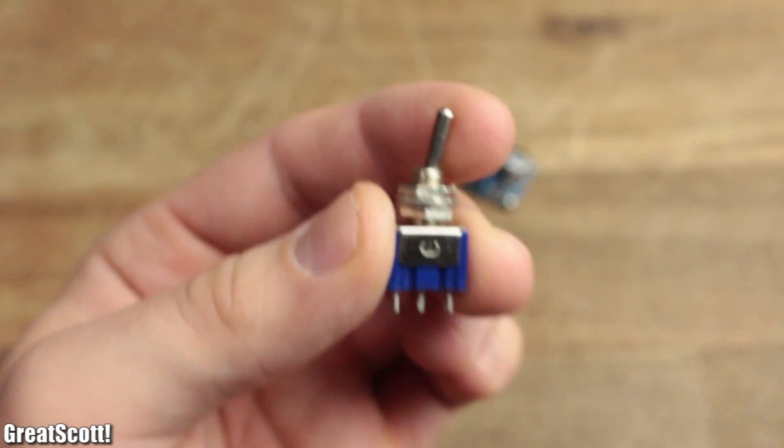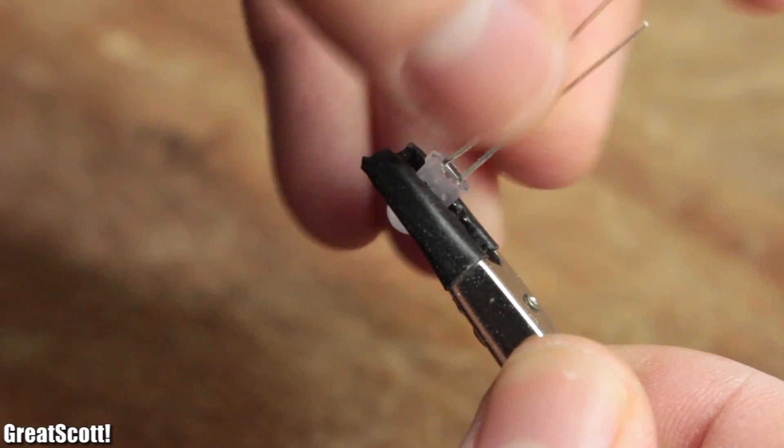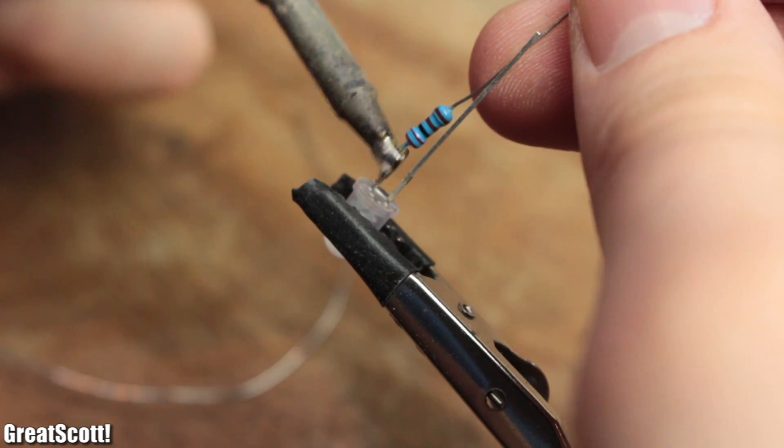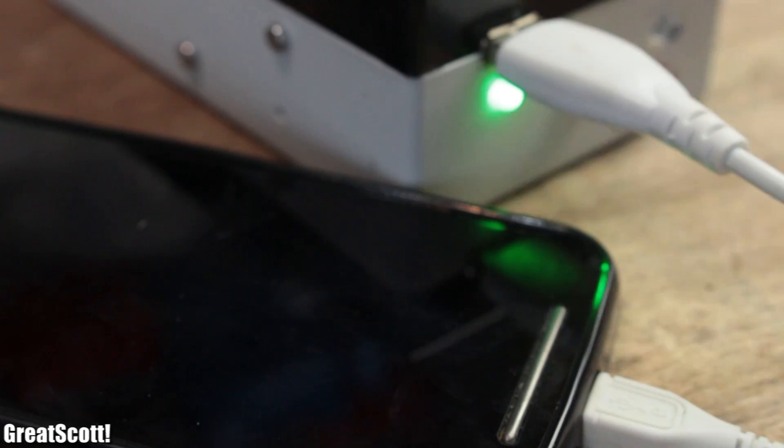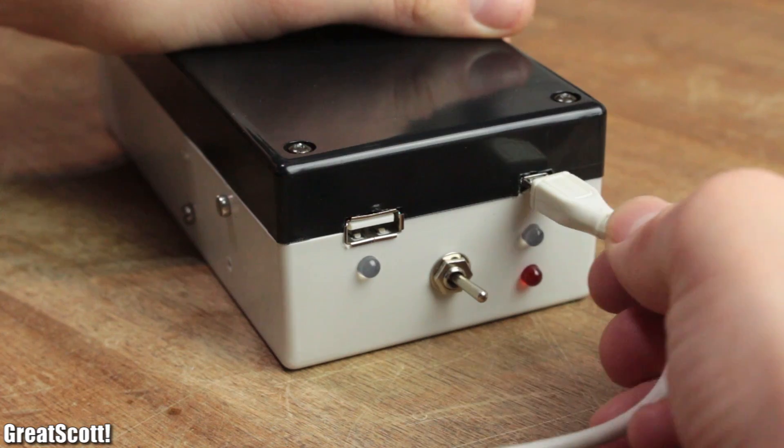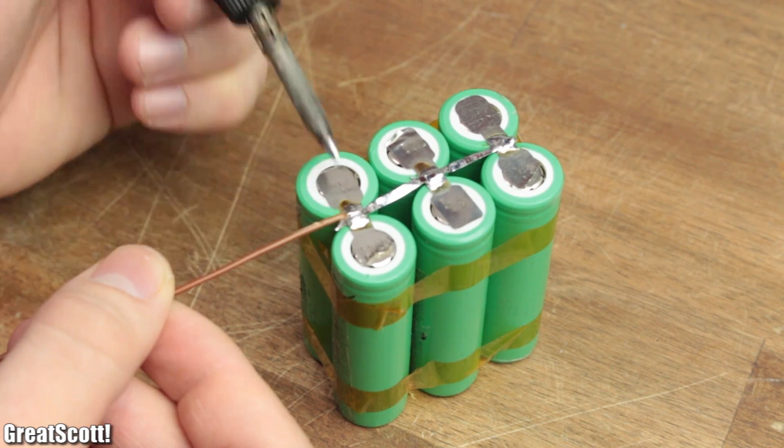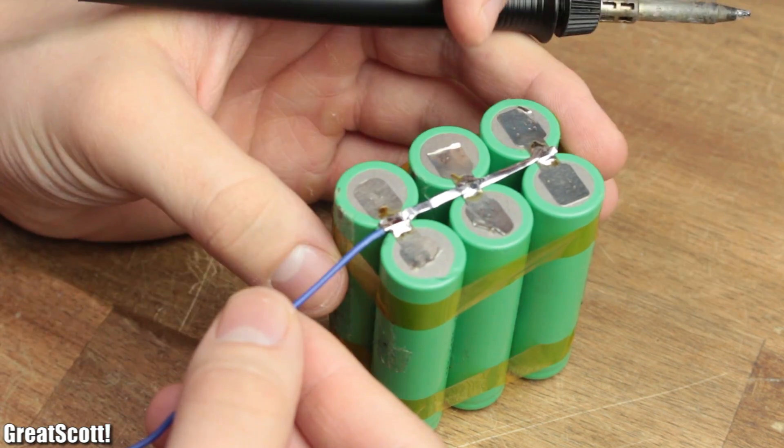For the finishing I also used a toggle switch to turn on the 5 volt output, one green 5 millimeter LED with a 2.2 kilo ohm resistor to showcase that the USB port is turned on, and finally two more LEDs which tell me whether the charging process is complete.